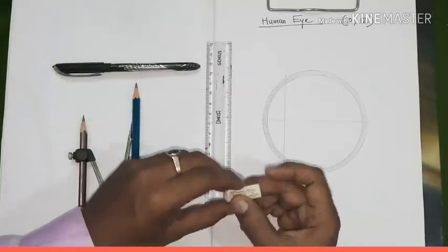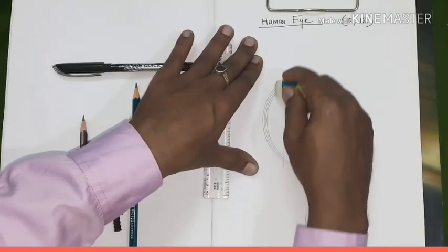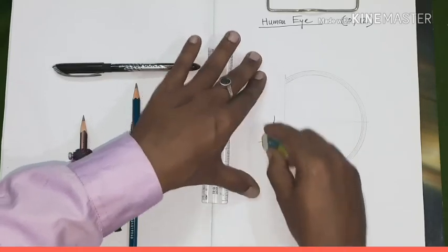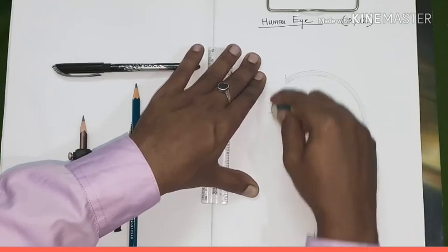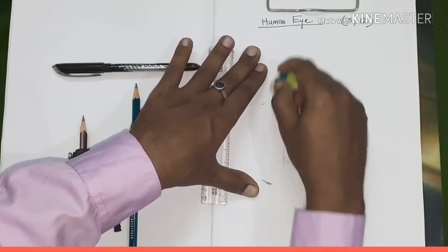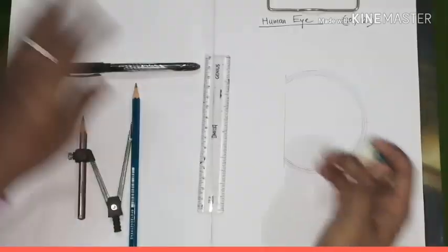Now, take the eraser, erase the anterior portion of the vertical line, erase it completely. Keep the horizontal line. You need not to erase anything else right now.